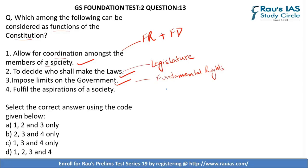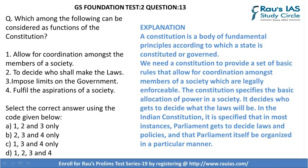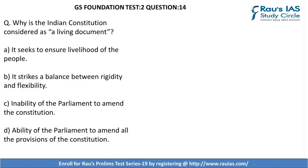Fourth — fulfill the aspirations of a society — is also correct. The aspirations of a society are given under the Directive Principles of State Policy, which act as a guideline when the legislature is making laws for the people. Hence, the right answer is D — 1, 2, 3, and 4. Please look at the explanation provided.